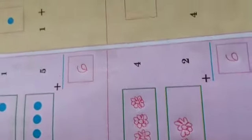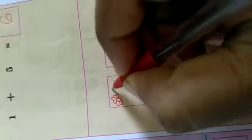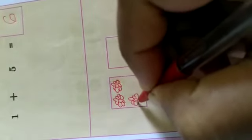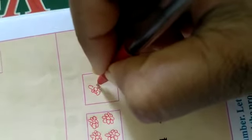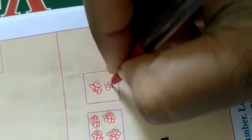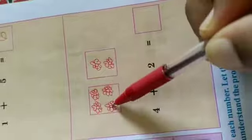Here 1, 2, 3, 4. Here 2. 1, 2. 1, 2, 3, 4 and 1, 2. How many? 1, 2, 3, 4, 5, 6. 6. 6 flowers are there.